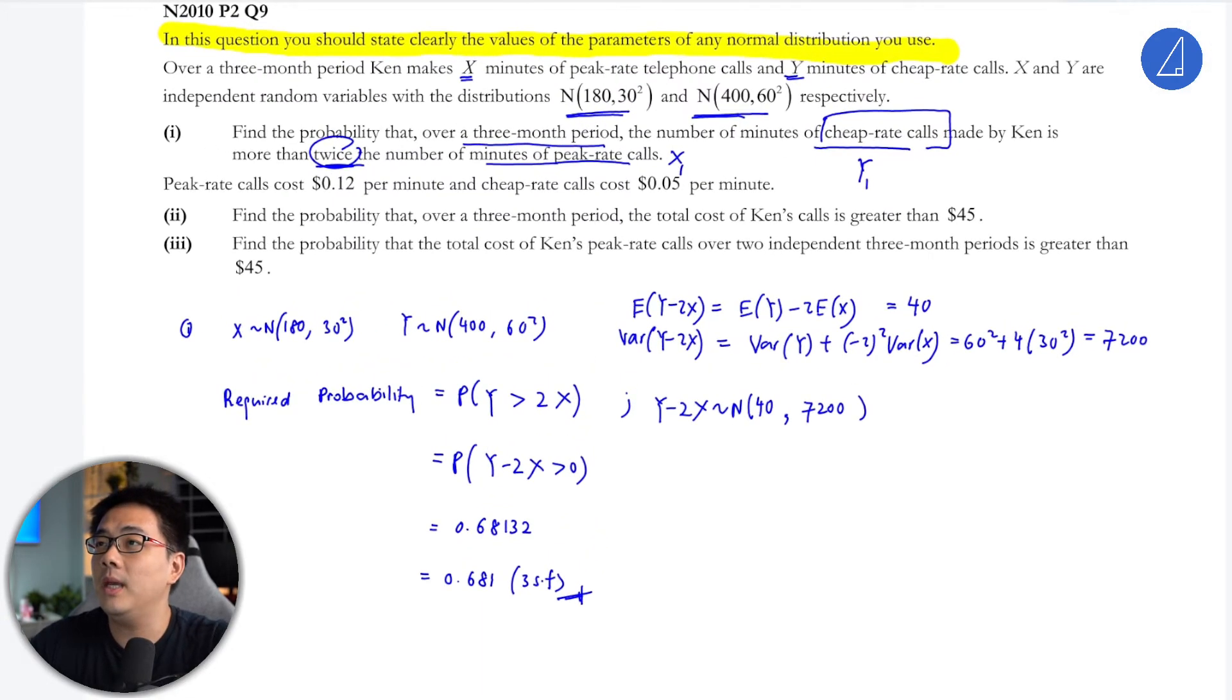So the second one, peak rate calls cost 12 cents per minute. I don't remember when—back in those days, you call people and you're charged by the minute. Nowadays you're charged by data, right? So cheap calls rate cost five cents per minute.